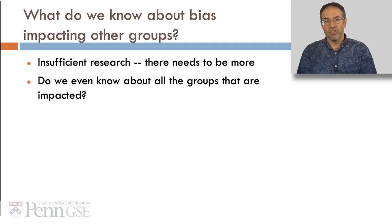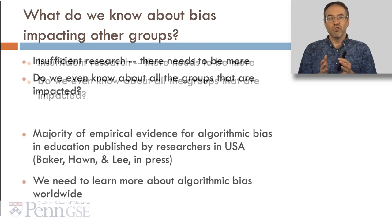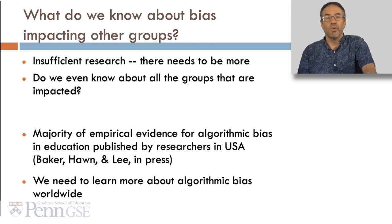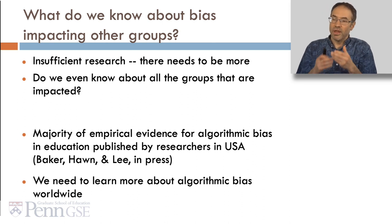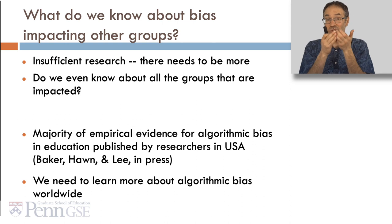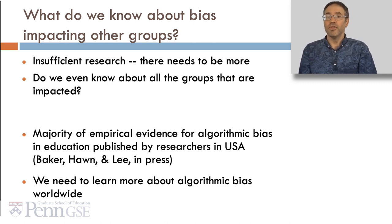There's still insufficient research about bias impacting other groups, and we don't even know about all the groups that are impacted. The majority of empirical evidence for algorithmic bias in education has been published by researchers in the US — the field is US-centric. We need much more work about algorithmic bias worldwide. There's been a decent amount increasingly in Europe, but surprisingly little in Asia, Africa, or Latin America.